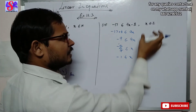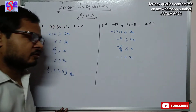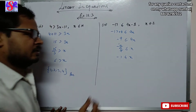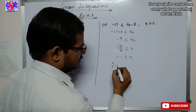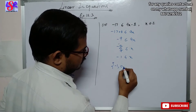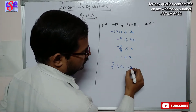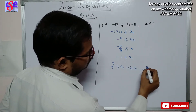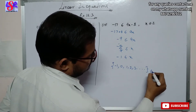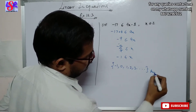So x is greater than or equal to minus 1. Now here x is an integer, and integers include negative and positive numbers. So the answer will be minus 1, 0, 1, 2, 3 and so on.